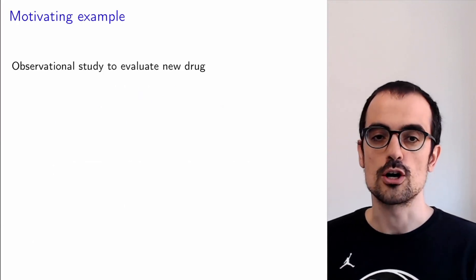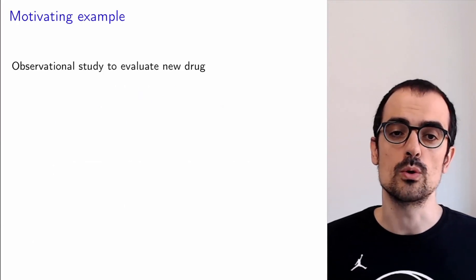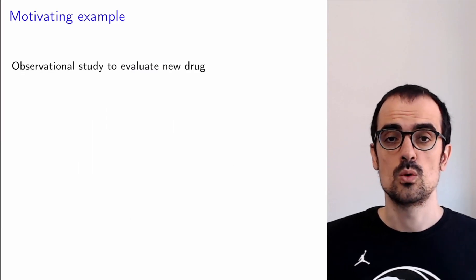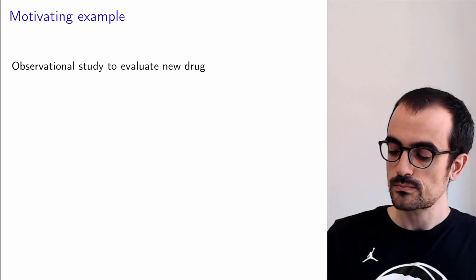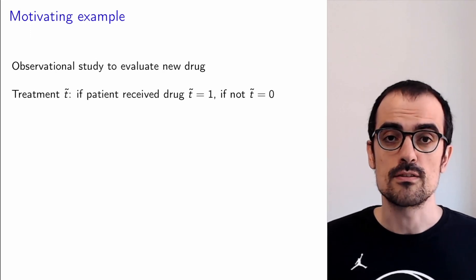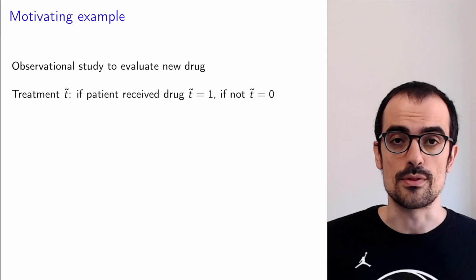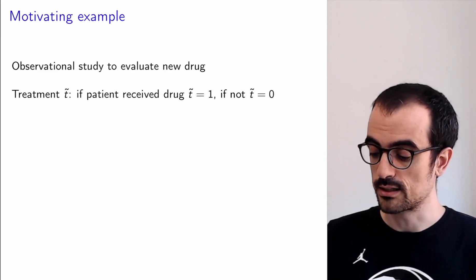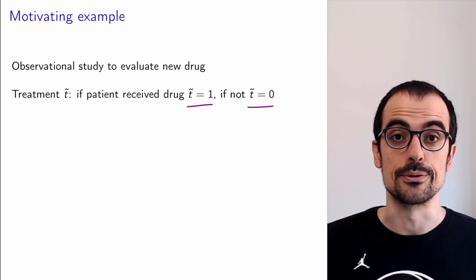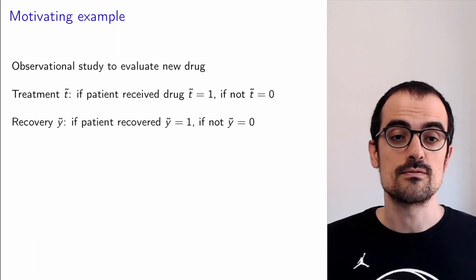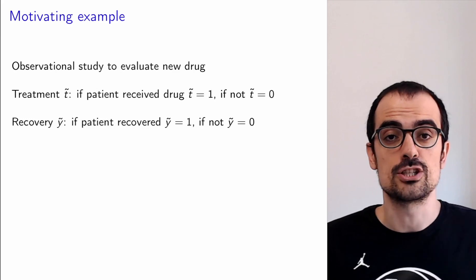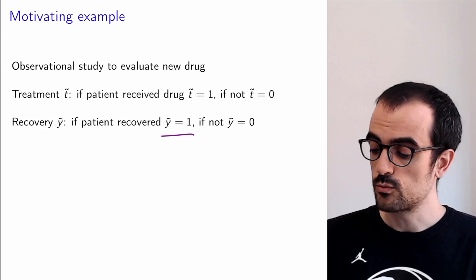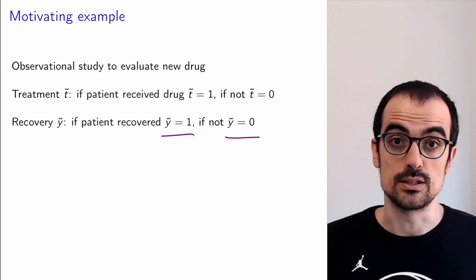We're going to be focused on a running example where we want to evaluate a new drug — we want to know whether the drug works. There's a random variable T that indicates whether patients receive the drug or not: if they receive the drug, T equals 1; if not, T equals 0. There's another random variable Y which tells us whether the patients recover: if Y equals 1, the patient recovered; if Y equals 0, they didn't recover.